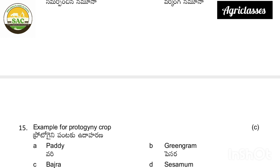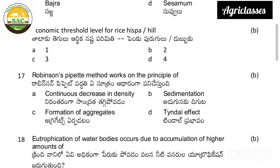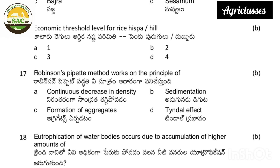Next question: an example of a protogynous crop — paddy, green gram, basra, or sesame. This is very important. Basra is the correct answer for protogynous crops.